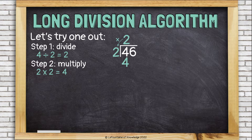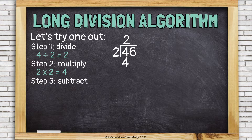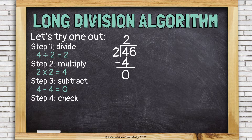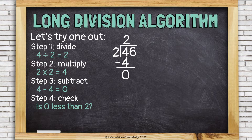That sets me up for step three, which is to subtract. I've lined up the two fours and now I can subtract: four minus four is zero. Step four is to check. I need to check that this number I ended up with, zero, is less than two. Because if it's not less than two, I messed something up. Is zero less than two? Yes, zero is less than two. I've checked and that's all good to go.